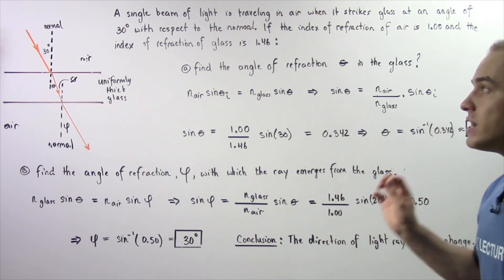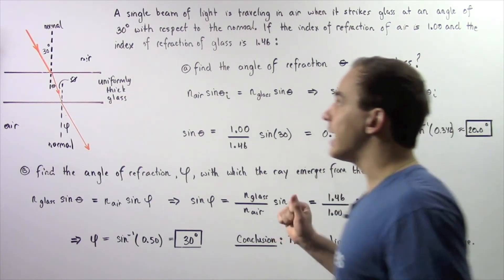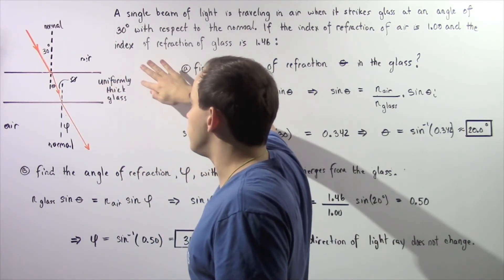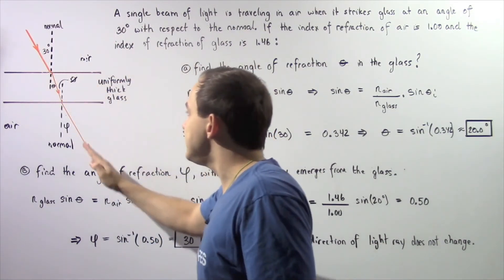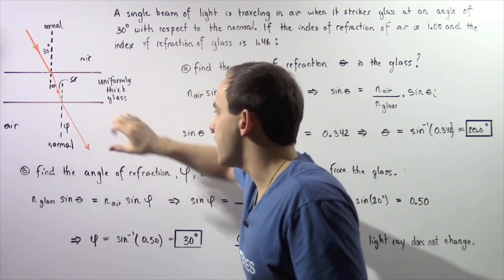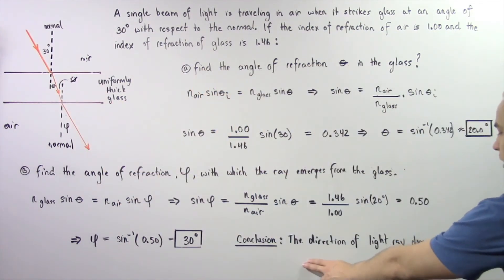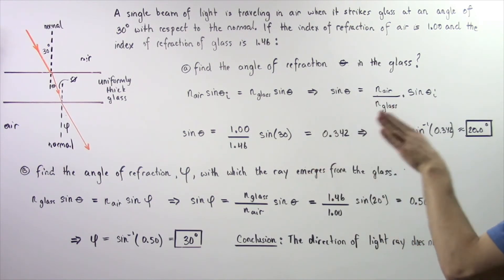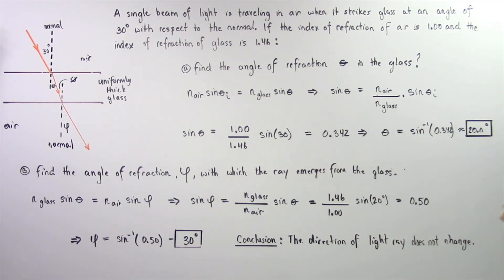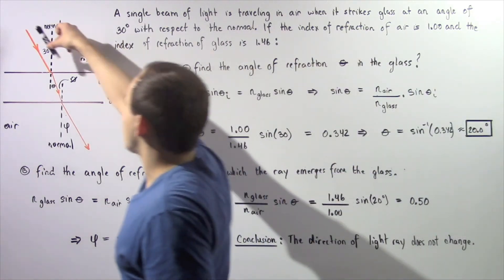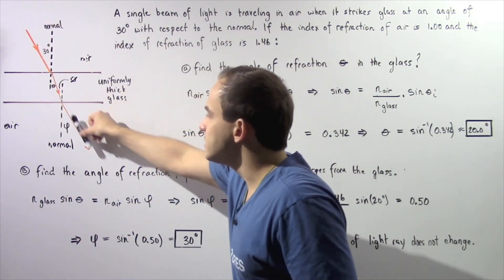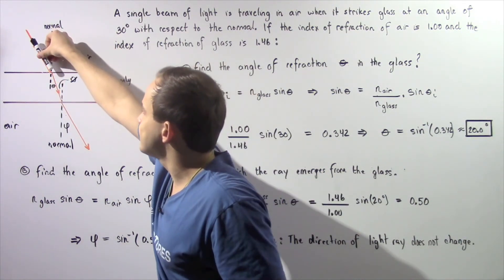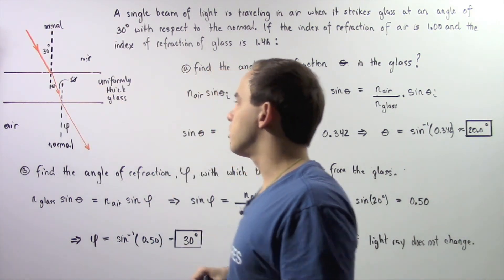So our conclusion is: when a single beam of light travels in air, then travels through the uniformly thick glass and returns to air, the direction of the light ray does not actually change. The direction of the ray remains the same, although its position does shift — it is essentially displaced laterally toward the right.